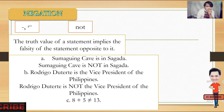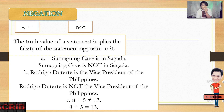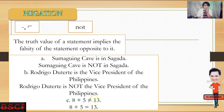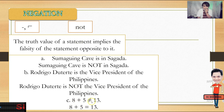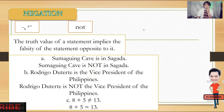Third example: '8 plus 5 is not equal to 15.' That is false, since 8 plus 5 is equal to 13. When we negate it, we get '8 plus 5 is not not equal to 13,' and the double negative removes the 'not,' giving us '8 plus 5 is equal to 13.'